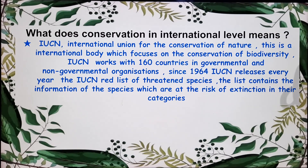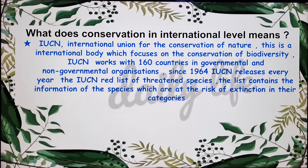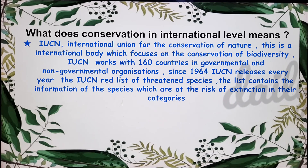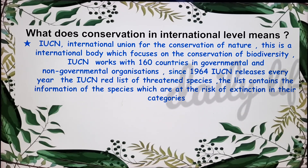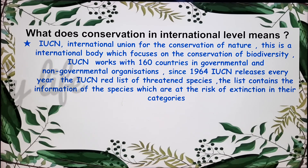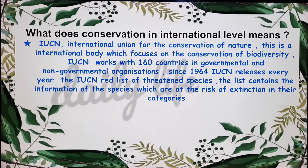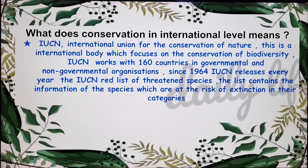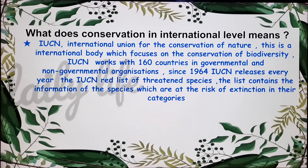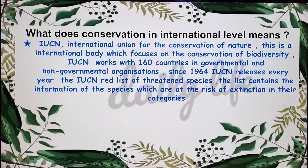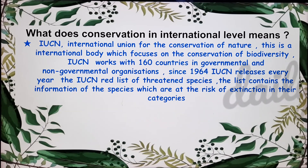What does conservation at the international level mean? International level means organization of something that is worldwide. We have in our lesson one organization known as IUCN — the International Union for the Conservation of Nature. This is an international body which focuses on the conservation of biodiversity. IUCN works with 160 countries in governmental and non-governmental organizations.